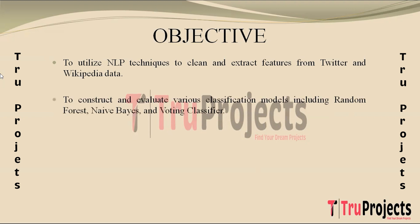The second objective involves constructing and evaluating multiple classification models including Random Forest, Naive Bayes and Voting Classifier, by training them on the extracted features and assessing their performance metrics such as accuracy, precision, recall and F1 score, to determine their effectiveness in accurately identifying cyber harassment patterns and distinguishing them from non-harassing content.